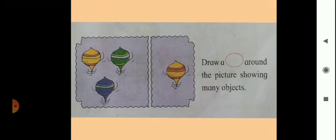Here are tops. In the first box there are three tops: one, two, three — first is yellow, second is green, and third is purple. In the second box there is only one top. The question is: draw a circle around the picture showing many objects. You will circle the three tops in the first box.